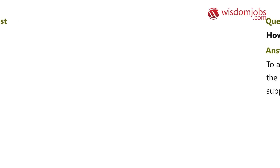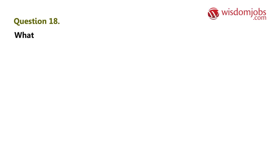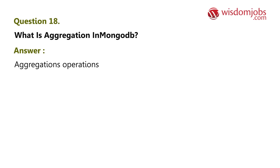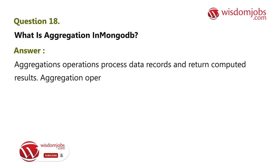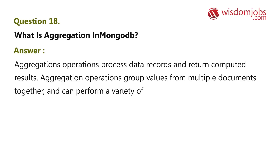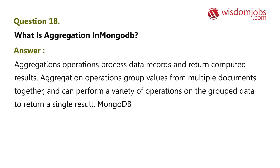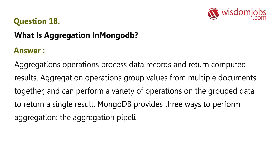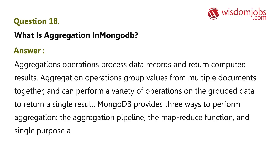Question 18: What is aggregation in MongoDB? Answer: Aggregation operations process data records and return computed results. Aggregation operations group values from multiple documents together and can perform a variety of operations on the grouped data to return a single result. MongoDB provides three ways to perform aggregation: the aggregation pipeline, the map-reduce function, and single-purpose aggregation methods and commands.